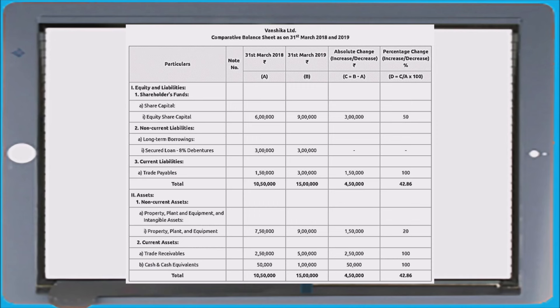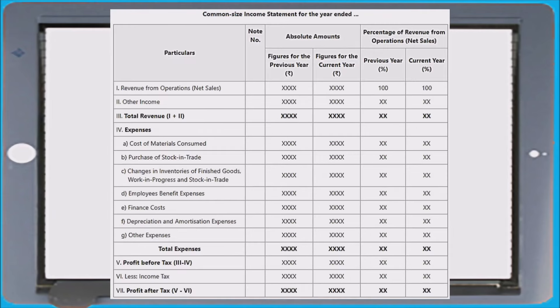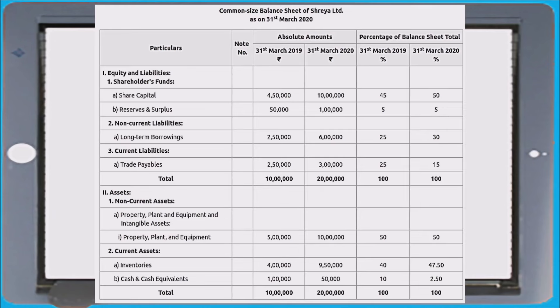For common size income statement or statement of profit and loss, we take revenue from operations as the denominator to find out all percentages. The percentage for revenue from operations will be 100 for both previous year and current year; all other values are calculated using total revenue from operations as denominator. For the common size balance sheet, the total of the balance sheet is taken as the denominator — for example, 4,50,000 divided by 10,00,000 into 100 gives 45%, and 10,00,000 divided by 20,00,000 into 100 gives 50%.